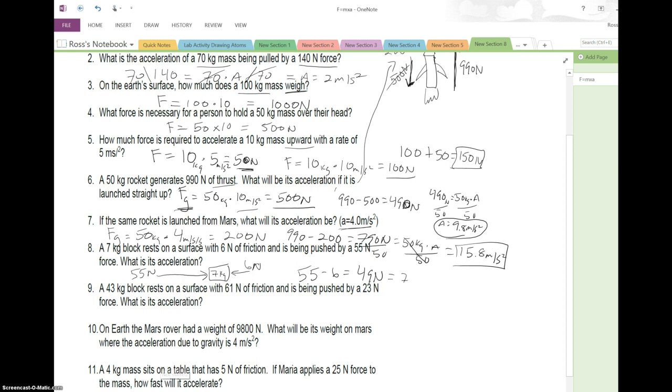Now we can set it up so that's 7 kilograms times acceleration. Divide both sides by 7. Acceleration is 7 meters per second per second.